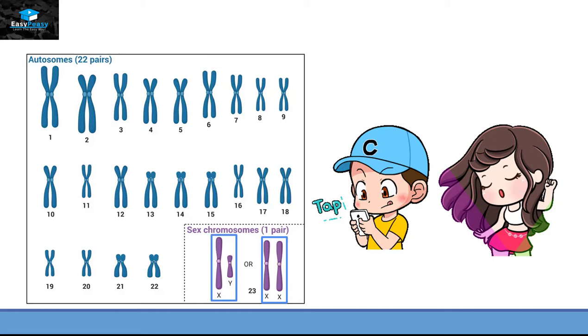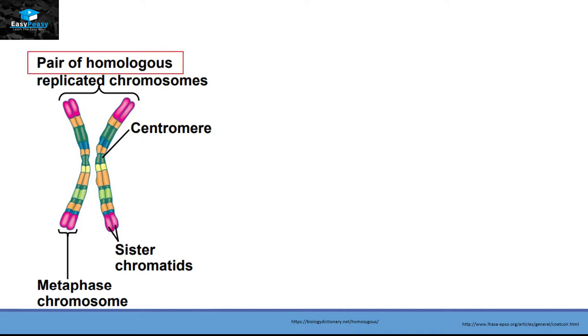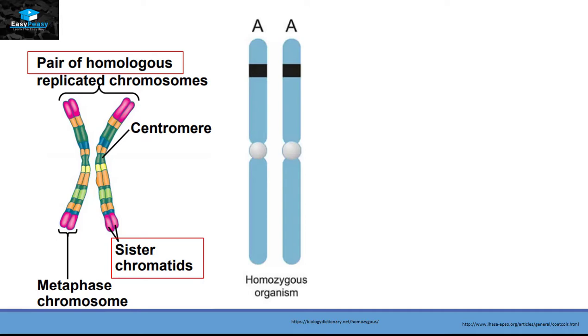Now, if we take one chromosomal pair from autosomes, we can see that they consist of a pair of homologous chromosomes. Homologous pair of chromosomes means they have the same type of genes present on both chromosomes. Each chromosome has two sister chromatids and these chromatids will contain genes on it.